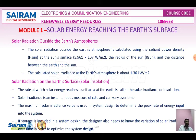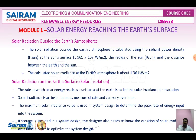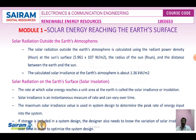Solar radiation on the Earth's surface is given by the rate at which solar energy reaches a unit area at the Earth's surface, called solar irradiance or solar insolation. Insolation means the Sun's energy received over a horizontal surface. The unit of irradiance is watts per square meter. Solar insolation is an instantaneous measure of rate that can vary over time. The maximum solar irradiance value is used in system design to determine the peak rate of energy input to the system, and the designer also considers how much irradiance accumulates over time.